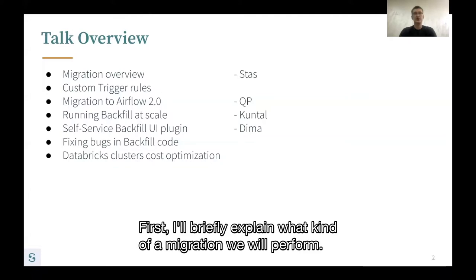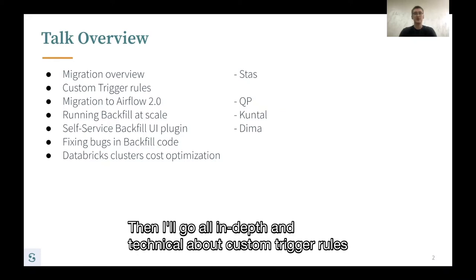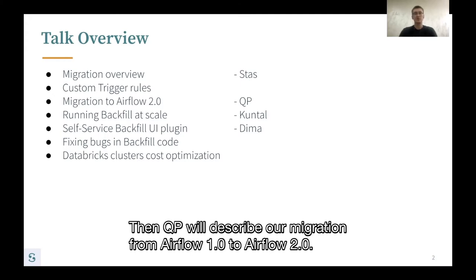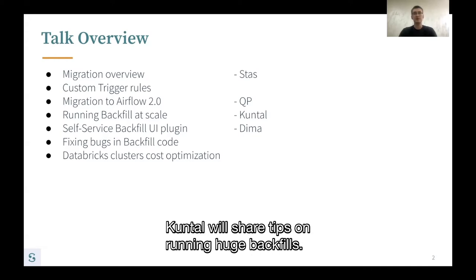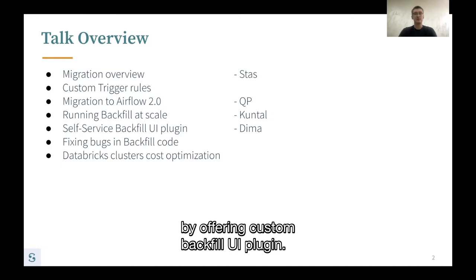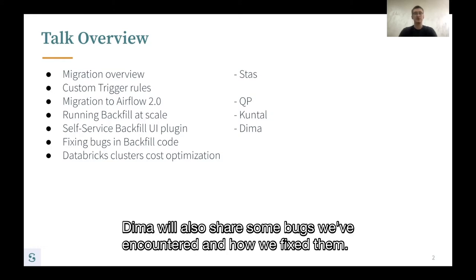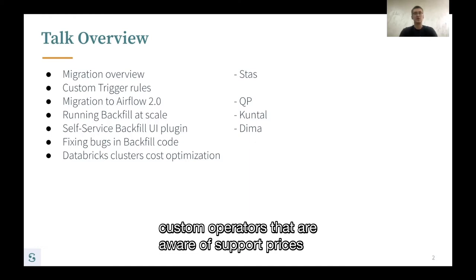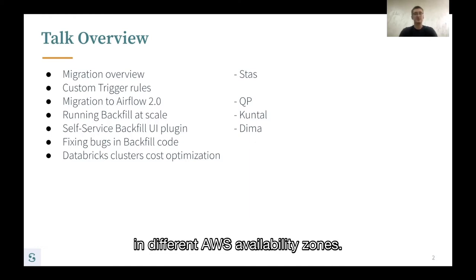First, I'll briefly explain what kind of migration we were performing. Then I'll go in-depth and technical about custom trigger rules we've implemented to achieve that migration. Then QP will describe our migration from Airflow 1 to Airflow 2. Kuntao will share tips on running huge backfills. Dima will describe how we've allowed users to run self-service backfills by authoring a custom backfill UI plugin, share some bugs we've encountered, and how we're saving money using custom operators that are aware of spot prices in different AWS availability zones.